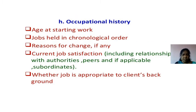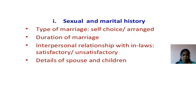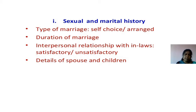Occupational history: age at starting work, jobs held in chronological order, reasons for any change, current job satisfaction including relationships with authorities, peers, and subordinates, and whether the job was appropriate to the client's background. Sexual and marital history: type of marriage — arranged or self-choice; duration of marriage; interpersonal relationship with in-laws — satisfactory or unsatisfactory; details of spouse and children.